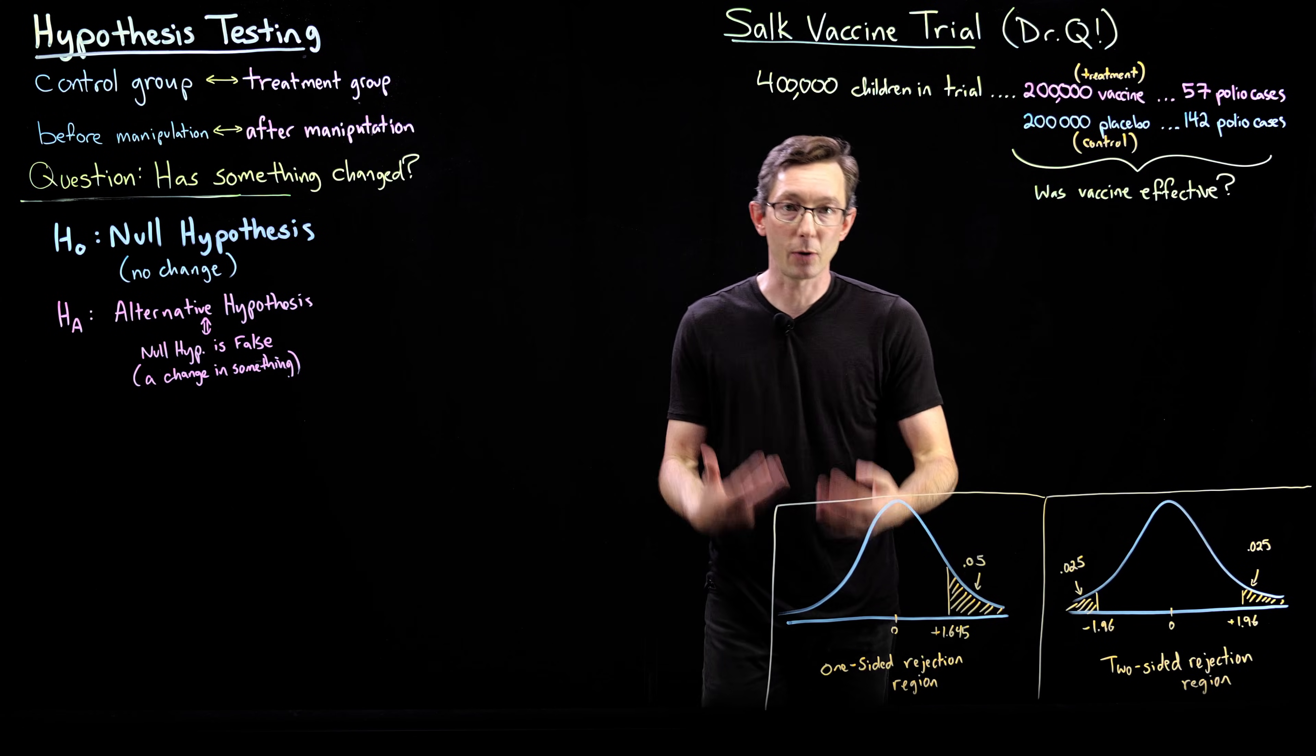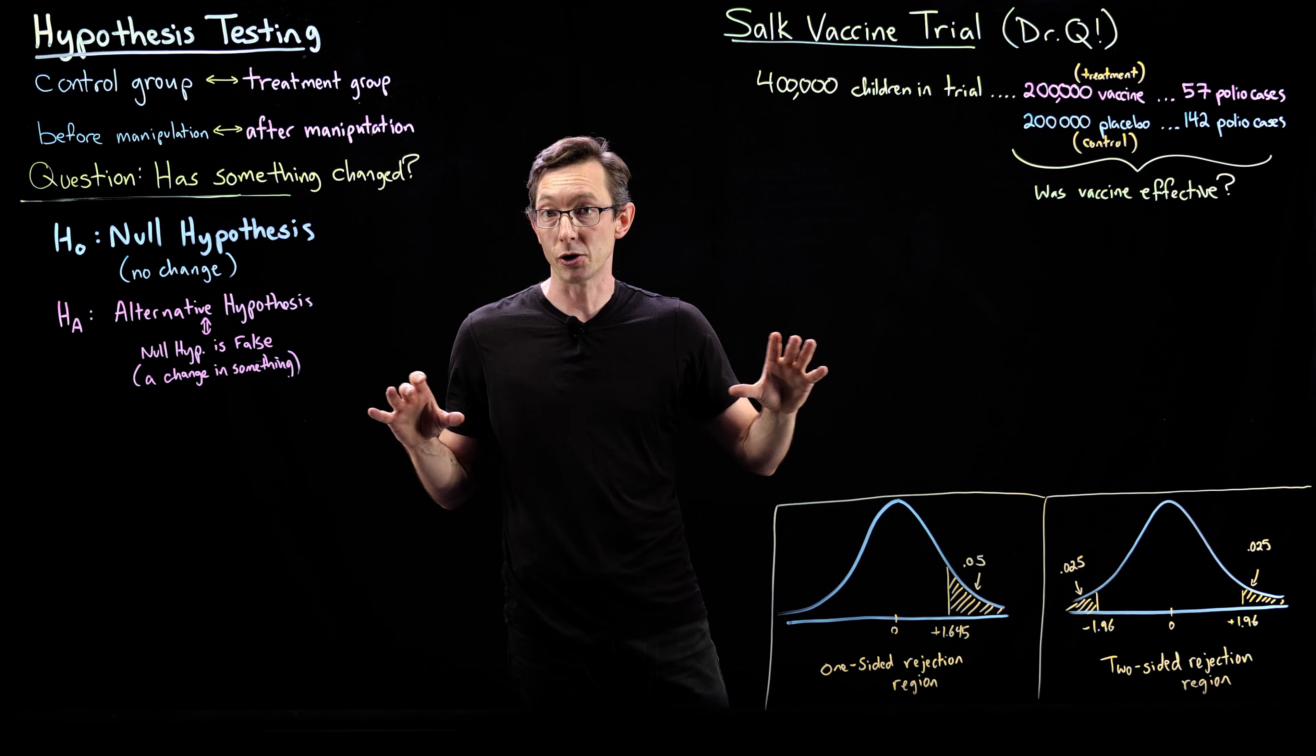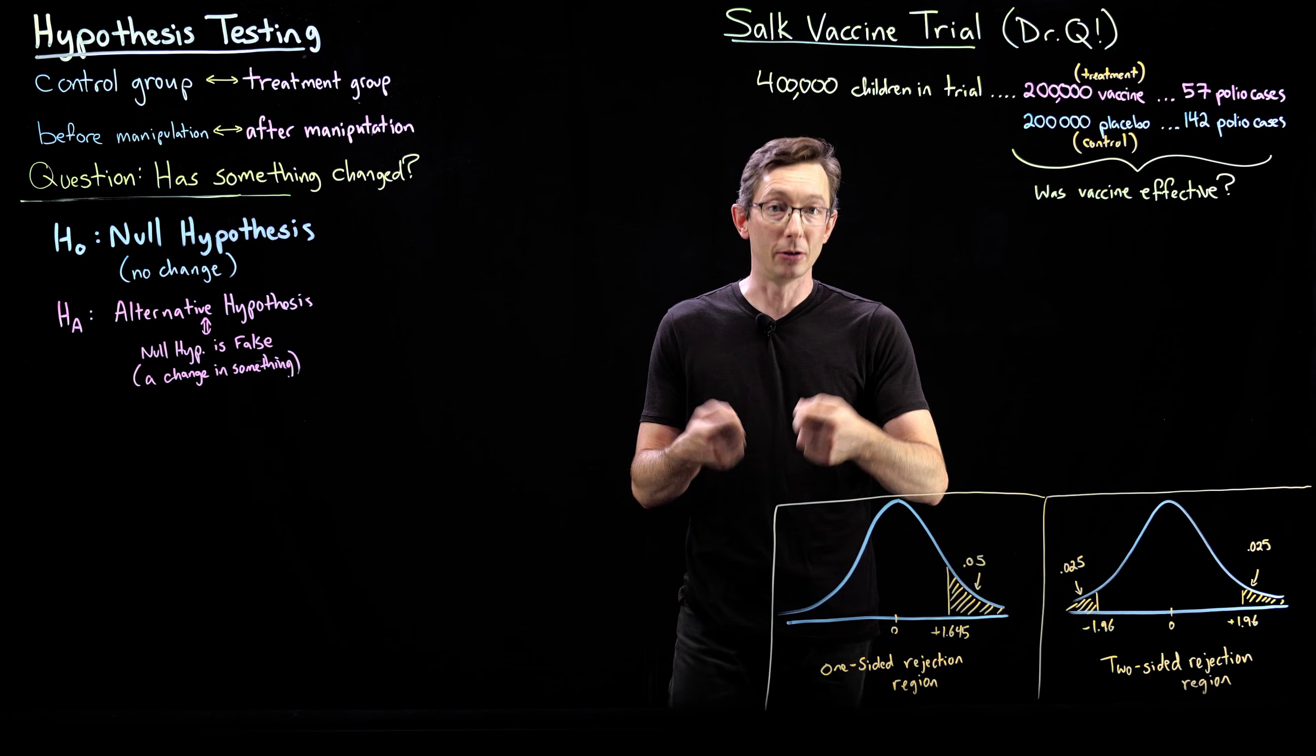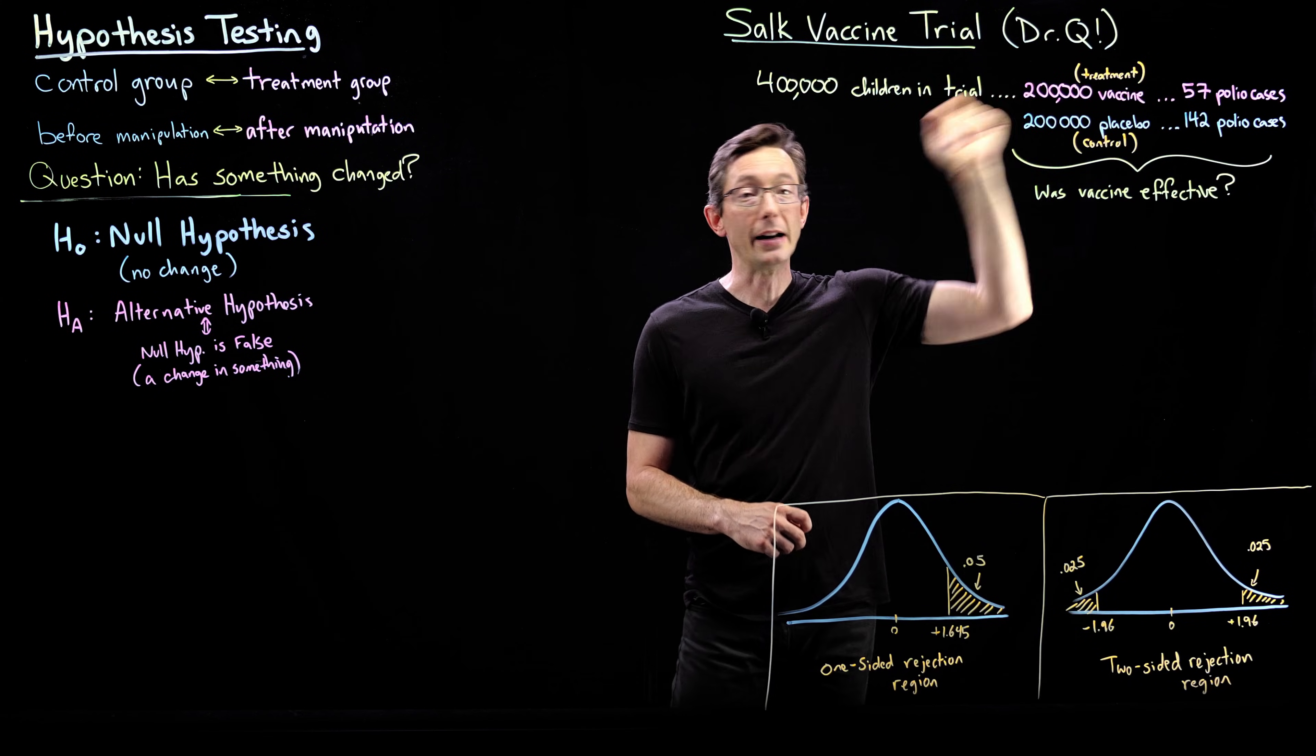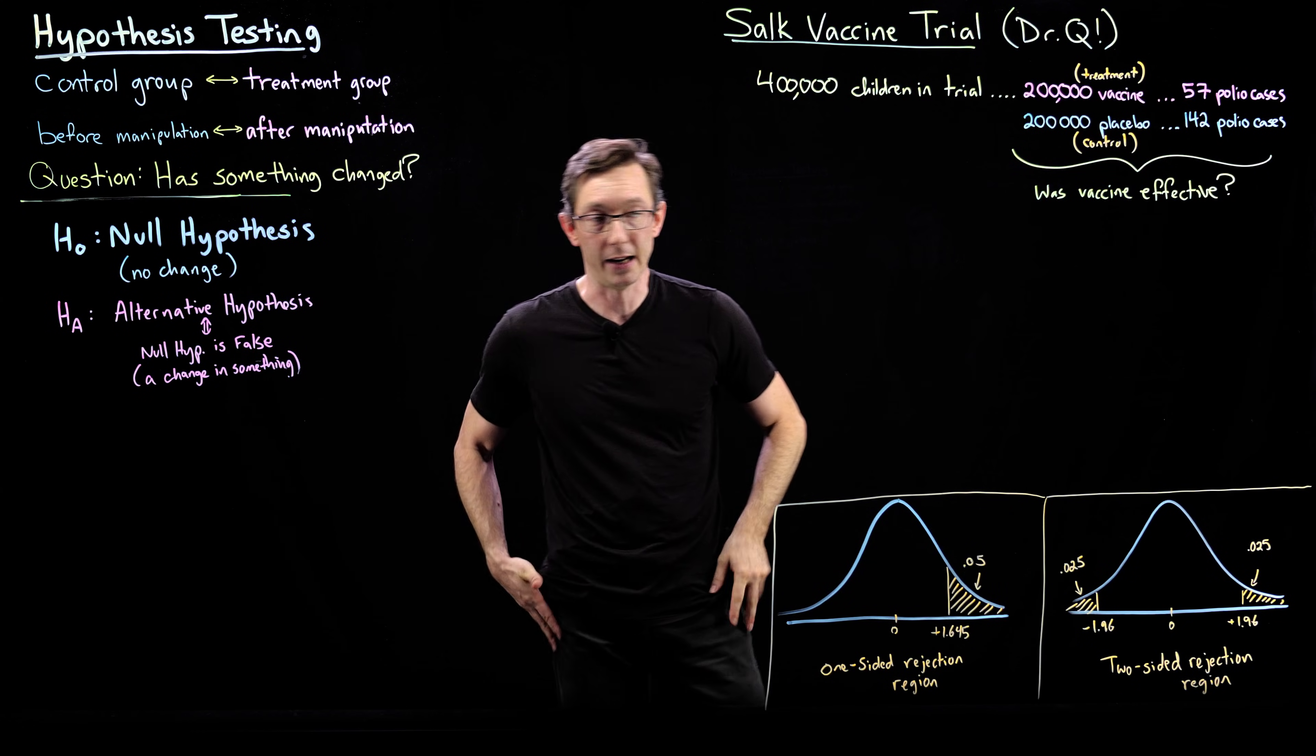Now the statistical question that we might want to ask is, was this vaccine effective? That's the public policy version of this question. And I guess the more mathematical way of saying this would be, did the vaccine decrease the rate of polio in the vaccinated treatment group? That would be a more precise mathematical way to say it.